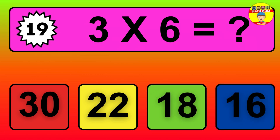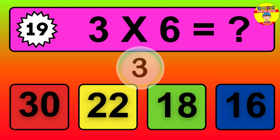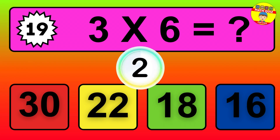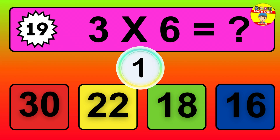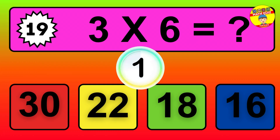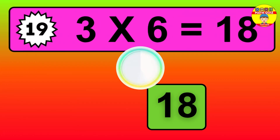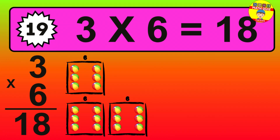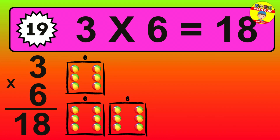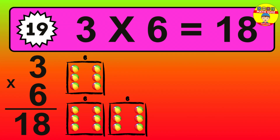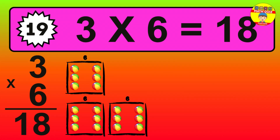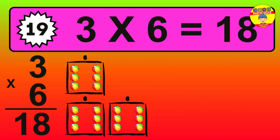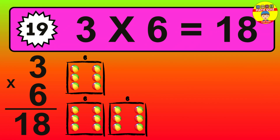Question 19. 3 times 6 equals what? The answer is 3 times 6 is 18. To calculate, we have 3 groups with 6 balls each one. So, how many balls do we have? 18 balls.